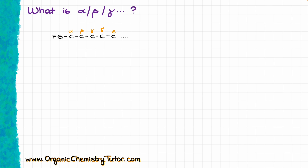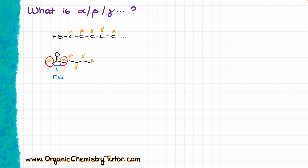Likewise, if we have any hydrogens on those positions, we are going to refer to them accordingly — for instance, an alpha hydrogen or a beta hydrogen. In the case of carbonyls, like aldehydes or ketones or any other carbonyl compounds, the carbonyl itself is going to be the functional group, which means the two positions nearby are going to be our alpha carbons. Typically we focus on the alpha positions right next to the carbonyl, and today I'm only going to be looking at the alpha position.